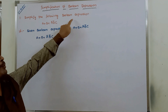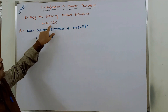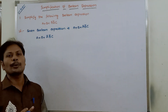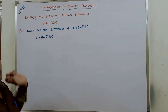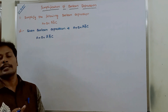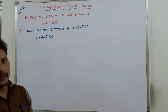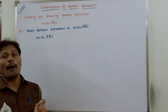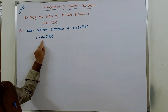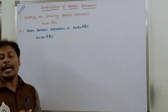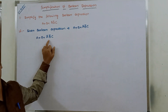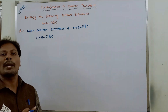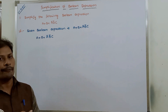The given problem is: simplify the following Boolean expression a + b + ā·b̄·c. In this expression, there are three variables a, b, and c. The first term contains only a single variable a; the remaining two variables are missing. The second term contains only b; the remaining two variables a and c are missing. The third term contains all three variables in complemented or uncomplemented form.